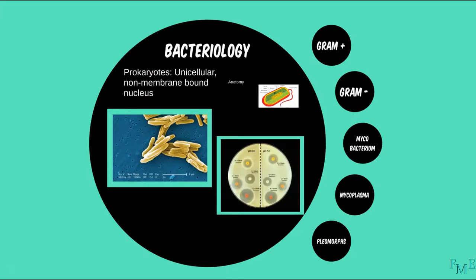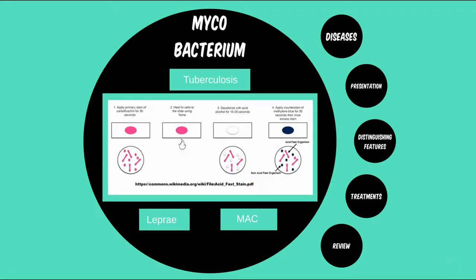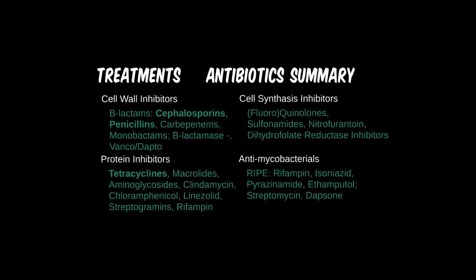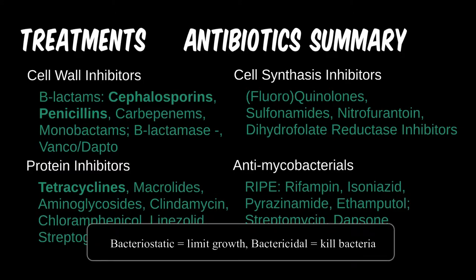For the first time in a while, we get to add a few new antimicrobials to the list. We left off with cell wall inhibitors, cell synthesis inhibitors, and protein inhibitors. These classes act on bacterial structures to prevent them from synthesizing needed materials or to kill them off right away. For the last grouping, the anti-mycobacterial agents are a mixture of several classes.